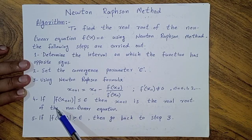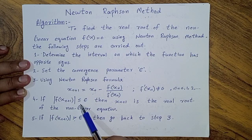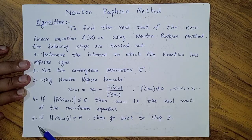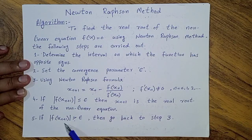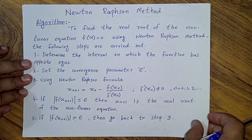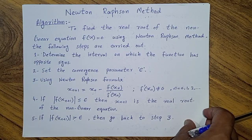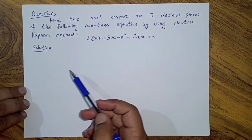Step 4: if |f(x_(n+1))| < epsilon, then x_(n+1) is the real root of the nonlinear equation. If |f(x_(n+1))| > epsilon, then go back to step 3. Now I will explain this using a question.